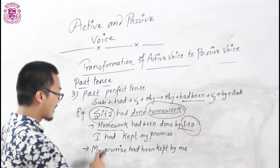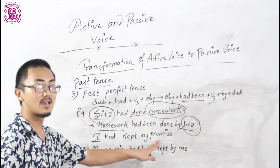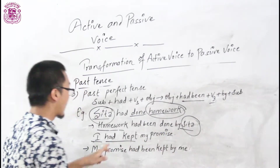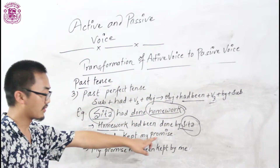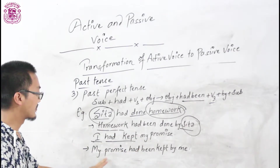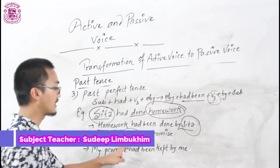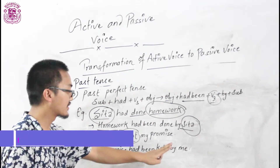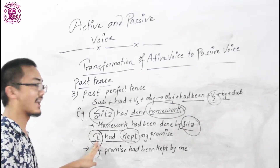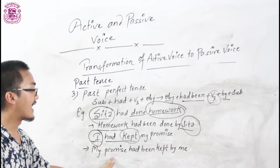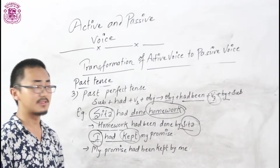Similarly, let's see the next example: 'I had kept my promise.' Here 'I' is used as subject and 'my promise' is used as object. You can see the structure: had plus V3 — 'had kept'. While changing this sentence into passive voice, 'my promise' is used as subject, and then 'had been': 'My promise had been' — and V3. The V3 of 'kept' is 'kept' itself. So: 'My promise had been kept by' — and when we write 'I' as object, we change 'I' into 'me'. So your final answer will be: 'My promise had been kept by me.'